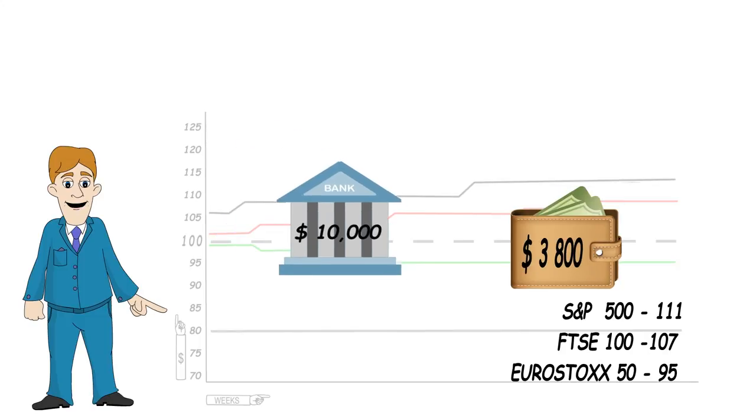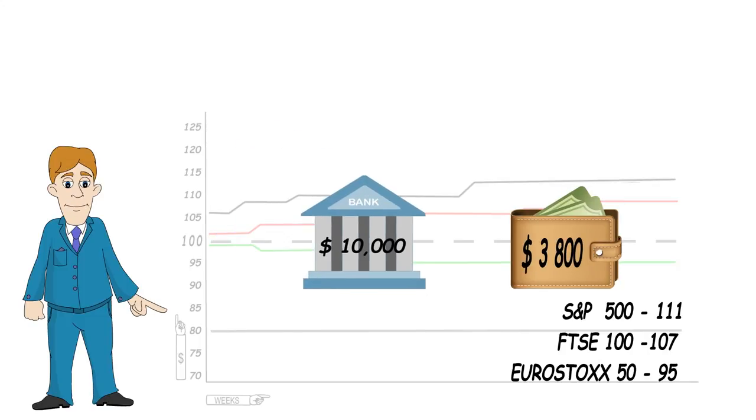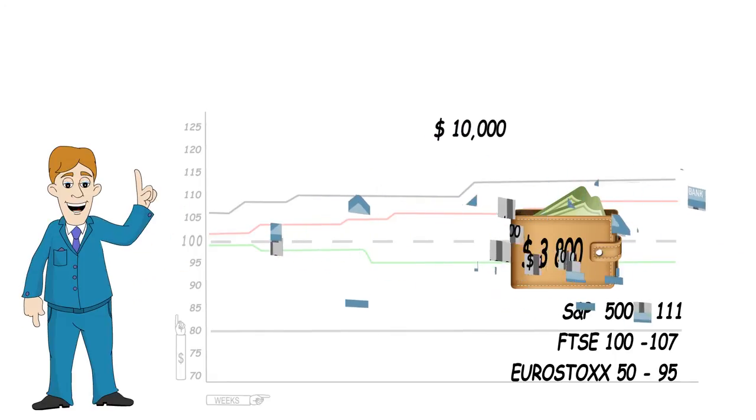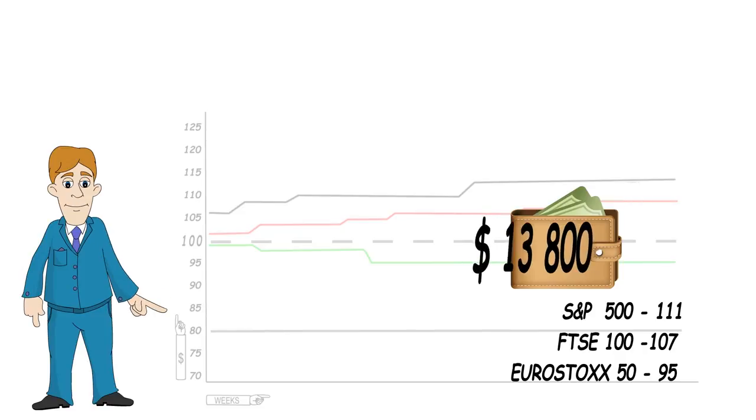When that final day closes, and the final price is taken, and all of your indexes are above the coupon barrier threshold, your $10,000 investment will also get returned 100% in full, ready for you to once again invest and get that money working for you.